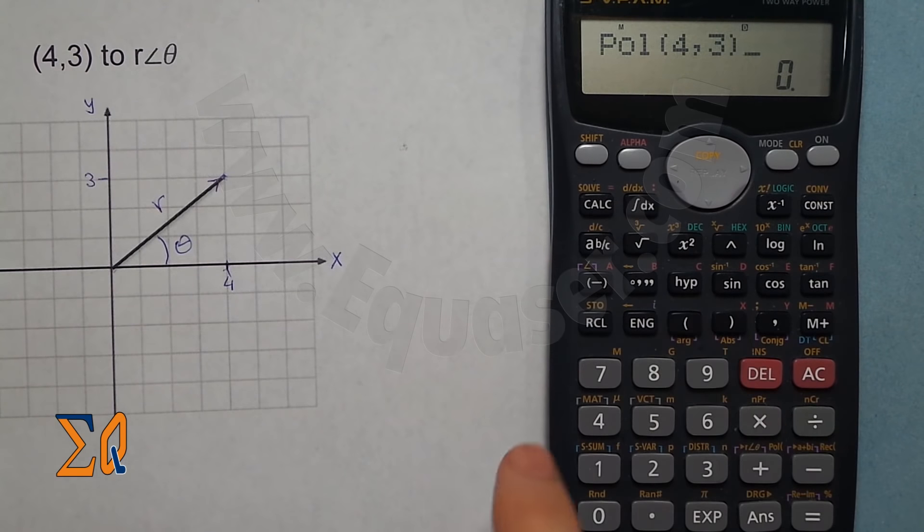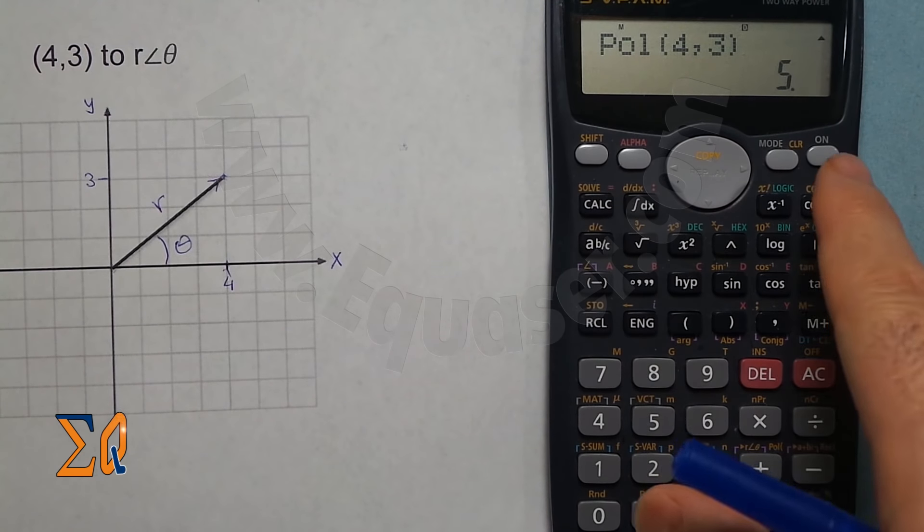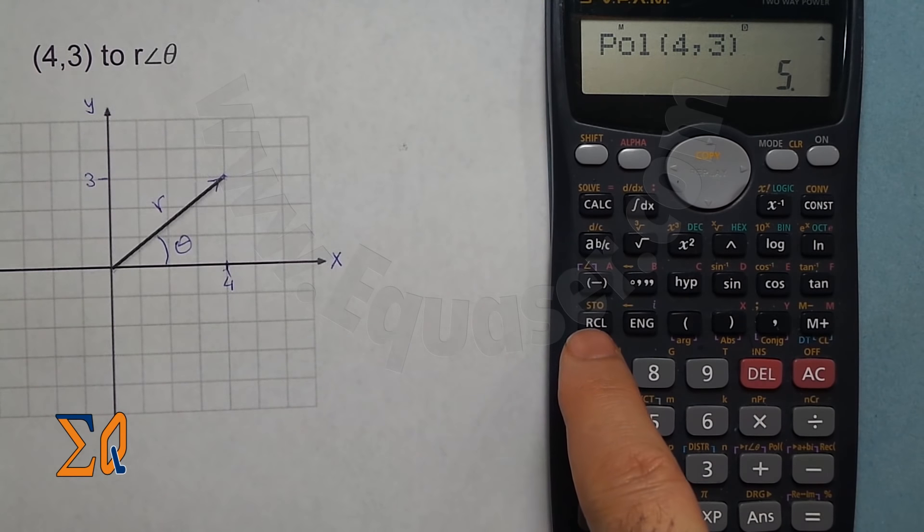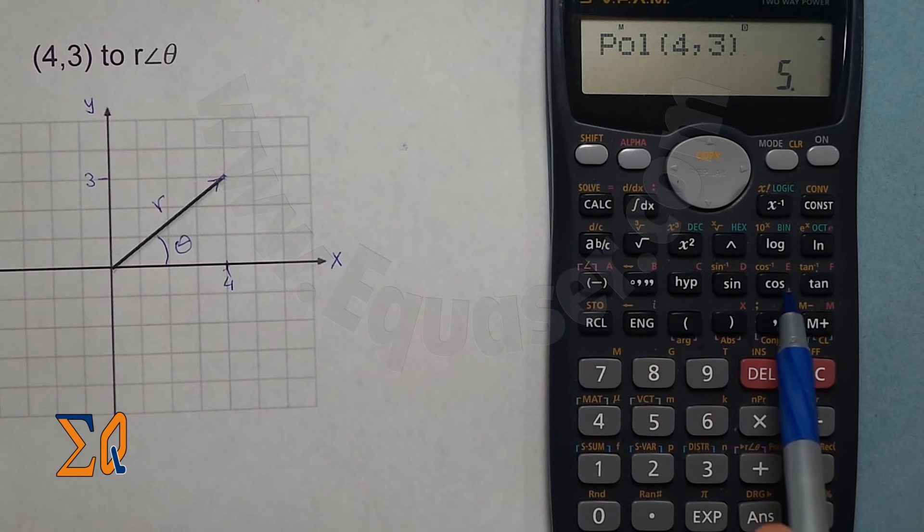Close it and press equal sign. This value is R but it doesn't say it. The best way to get R and theta is to press recall. R goes into memory E and angle theta goes into F.